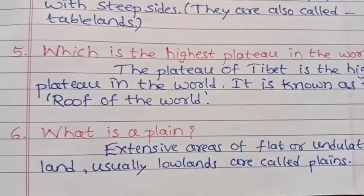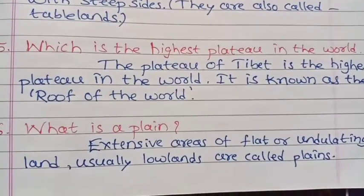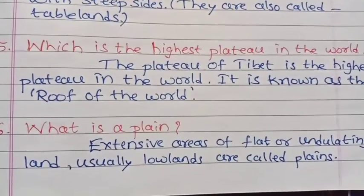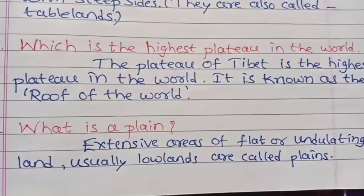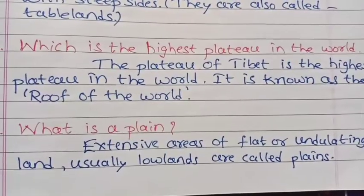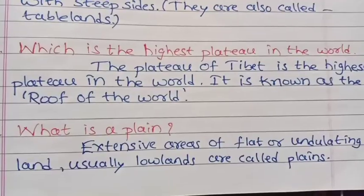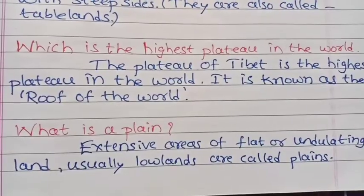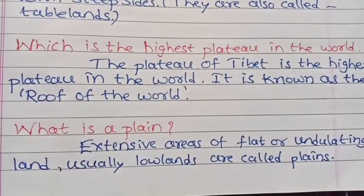What is a plain? Extensive areas of flat or undulating land that are usually low lands are called plains.